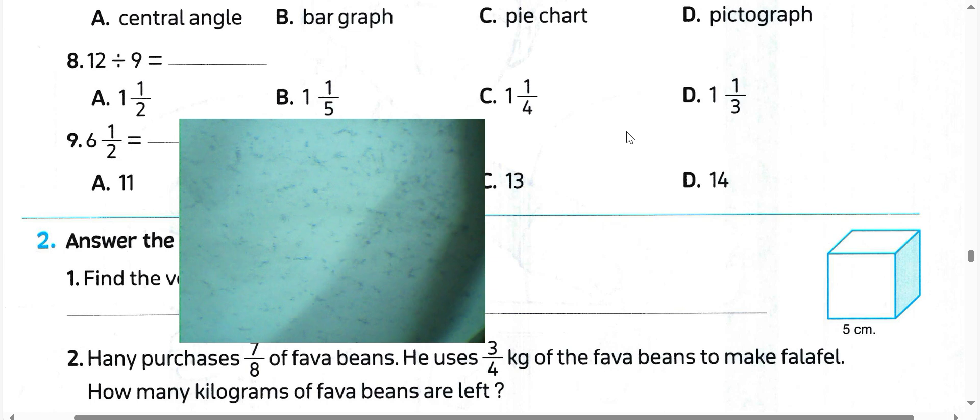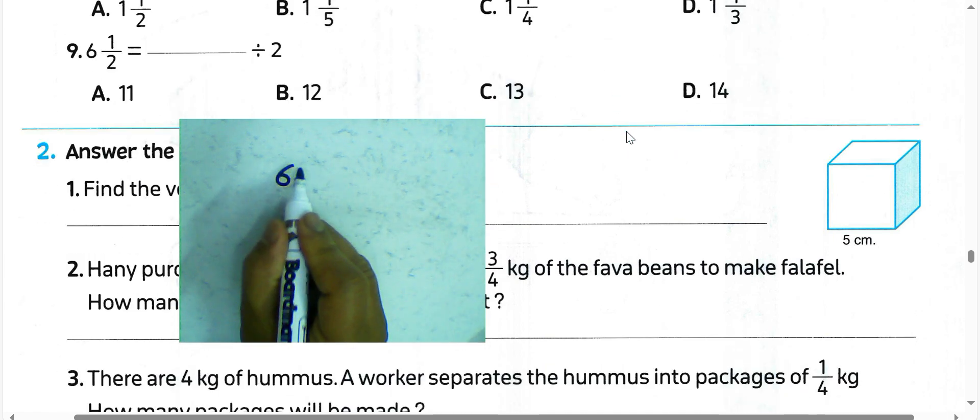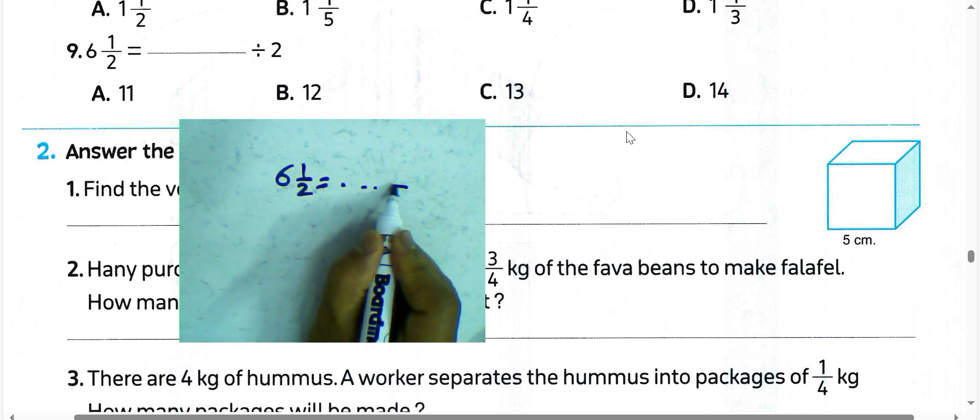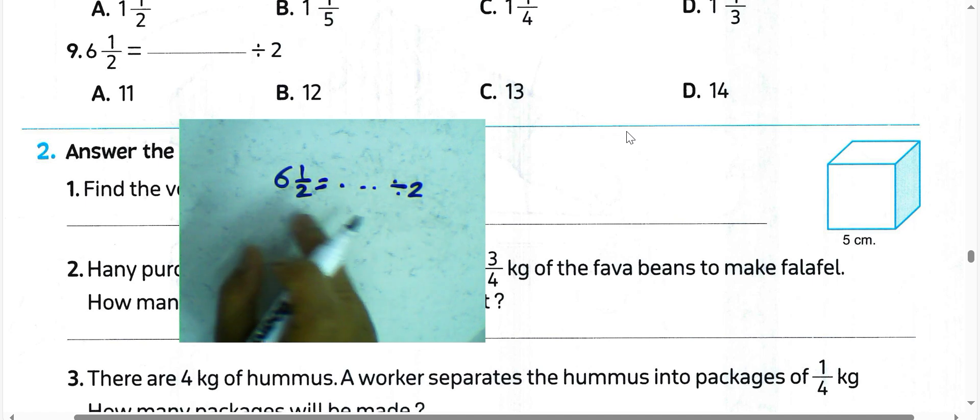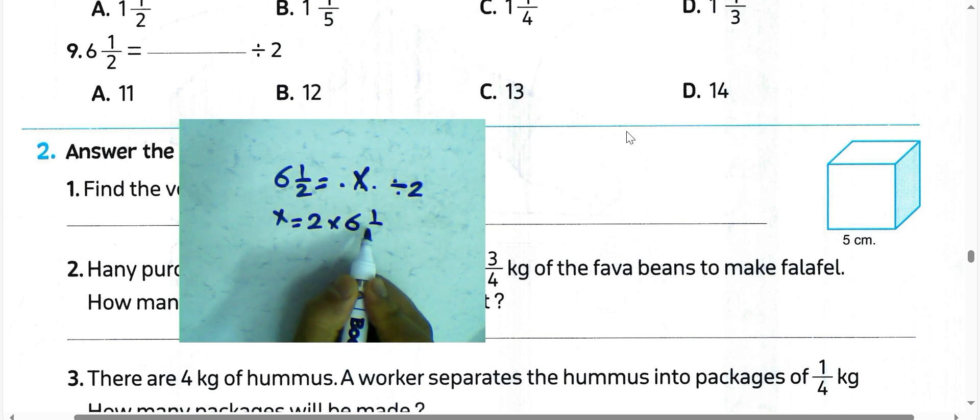Next question, 6 and 1/2 equals space divided by 2. The dividend equals divisor times the quotient. Then this number x equals 2 times 6 and 1/2. Write 2 times 13/2: 2 times 6 is 12 plus 1 equals 13. 1 times 13 equals 13.